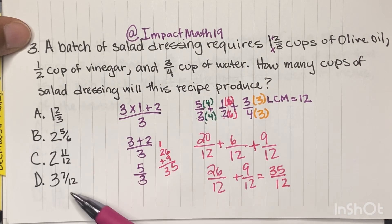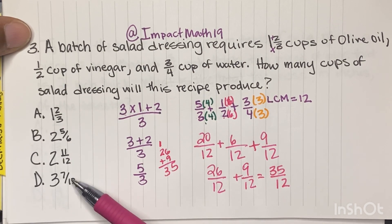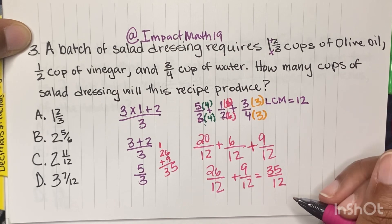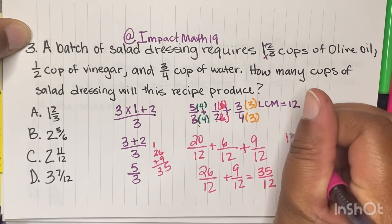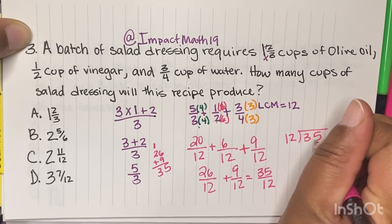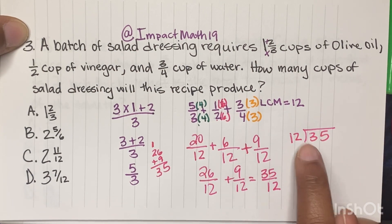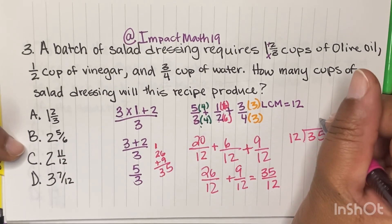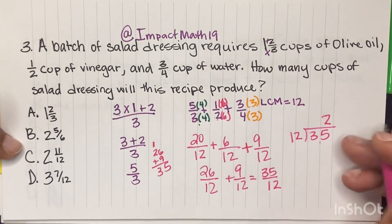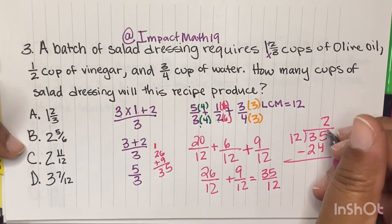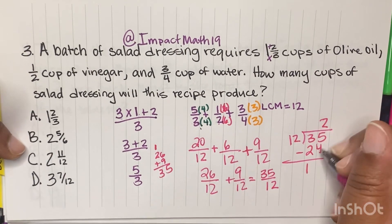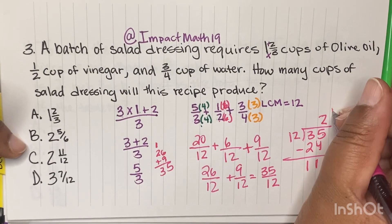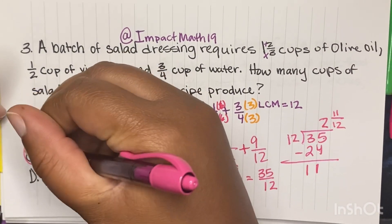All of our answers are in mixed numbers, but we have 2 that are only equaling in 12, so we just gave ourselves a 50-50 chance. Let's change 35 over 12 to a mixed number. We take the bottom divided into the numerator: how many 12s fit into 35? Looking at the answer choices, you only have 2 or 3. 2 times 12 is 24. 35 minus 24 — 5 minus 4 is 1, 3 minus 2 is 1 — we're left with a remainder of 11. So we take the remainder over 12, and C is our answer.